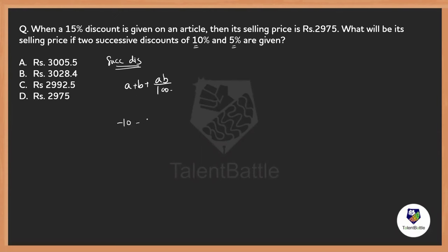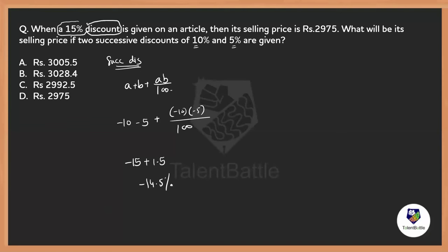So here, a = −10 and b = −5, because the first discount is 10% and the second is 5%. Applying the formula: −10 + (−5) + (−10 × −5)/100 = −15 + 0.5 = −14.5. So the net successive discount is 14.5%.